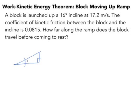So here's our picture. We have a block being launched up this ramp. This is a 16 degree angle. There's my 16 degree angle, and my block is being launched up this ramp, and it's got some initial speed, 17.2 meters per second. And our task is to find how far up the ramp does it travel, what's the distance up the ramp that it moves. And there's one last thing we know, the coefficient of kinetic friction is 0.0815.